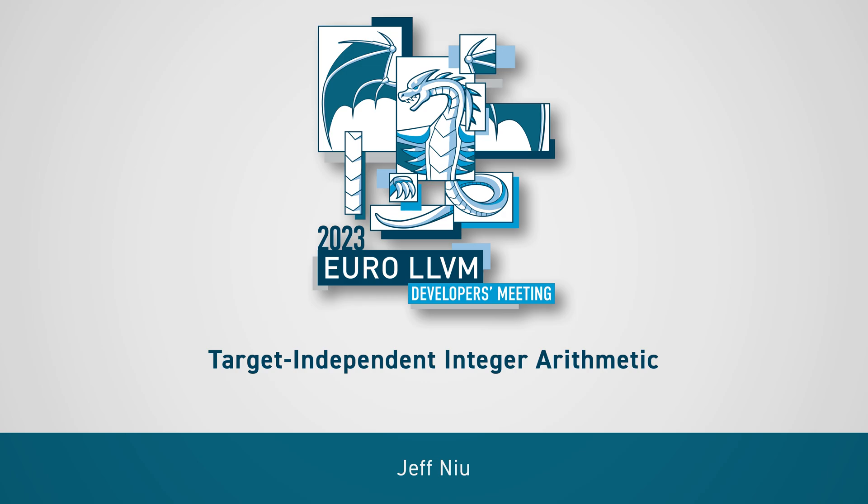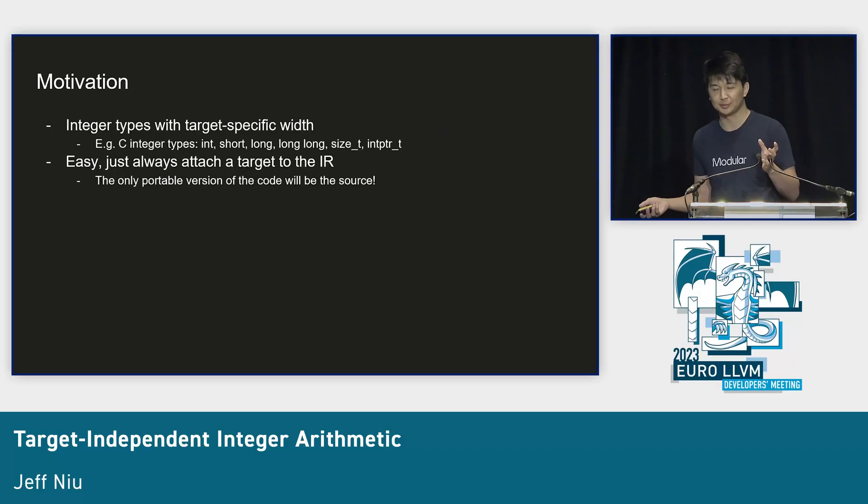This talk is about target-independent integer arithmetic, specifically because floating points are more complicated. Let's talk about motivation: why do we want target-independent integer arithmetic? Some programming languages have integer types with target-dependent width. You think of your C types, your ints, your longs, your shorts.